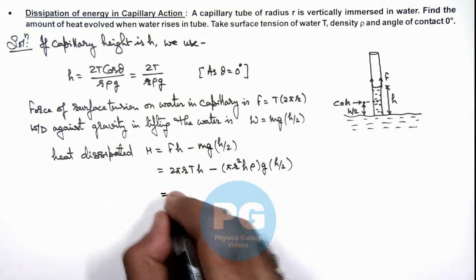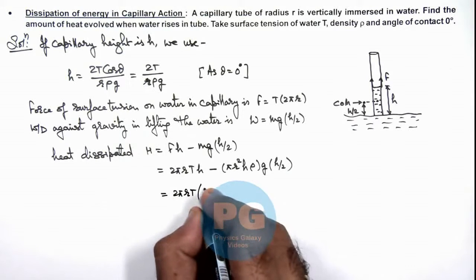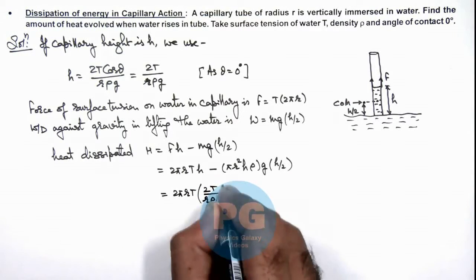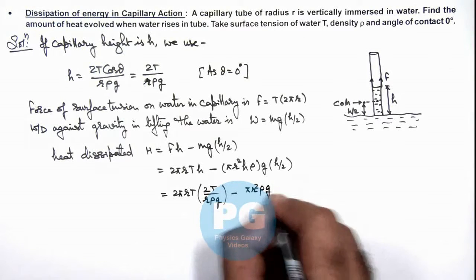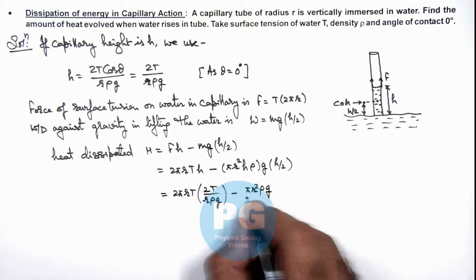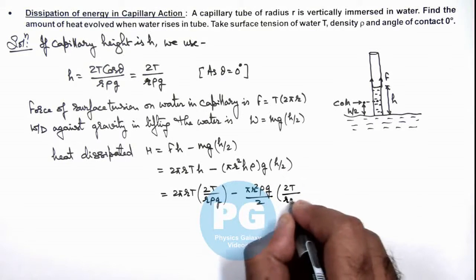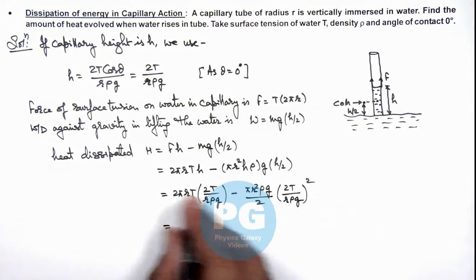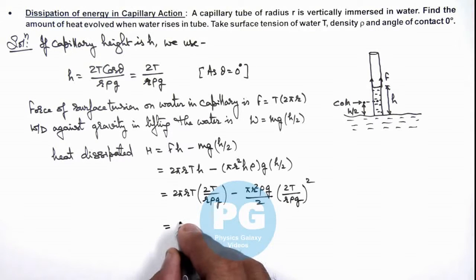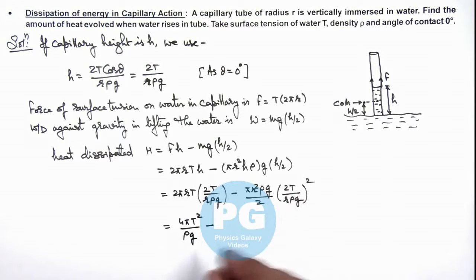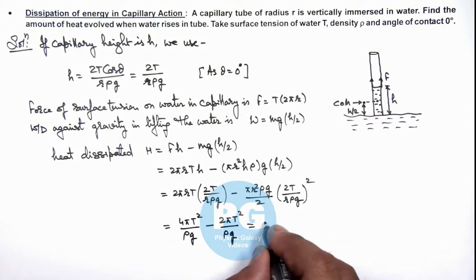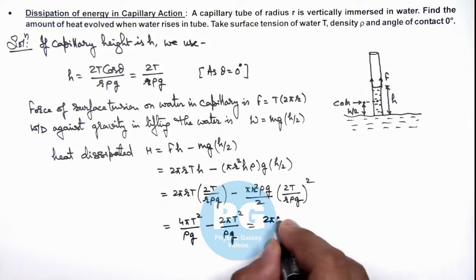Substituting h = 2T/(rρg), this gives us 2πrT multiplied by 2T/(rρg), minus πr² · ρg · h²/2 where h² is (2T/rρg)². Simplifying: one r cancels, giving 4πT²/(ρg). Then one r², one ρg, and one factor of 2 cancel in the second term, giving 2πT²/(ρg). The final result is 2πT² divided by ρg.